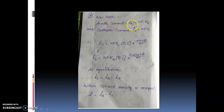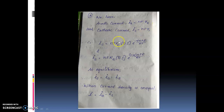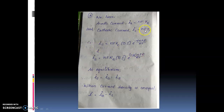The anodic current Ia can be expressed as n·F·R2, and the cathodic current Ic can be related as n·F·R1. Substituting R1 and R2, Ia equals n·F·ka·[reduced state]·e raised to (1−α)·n·F·E divided by RT, and Ic equals n·F·kc·[oxidized state]·e raised to minus α·n·F·E divided by RT.